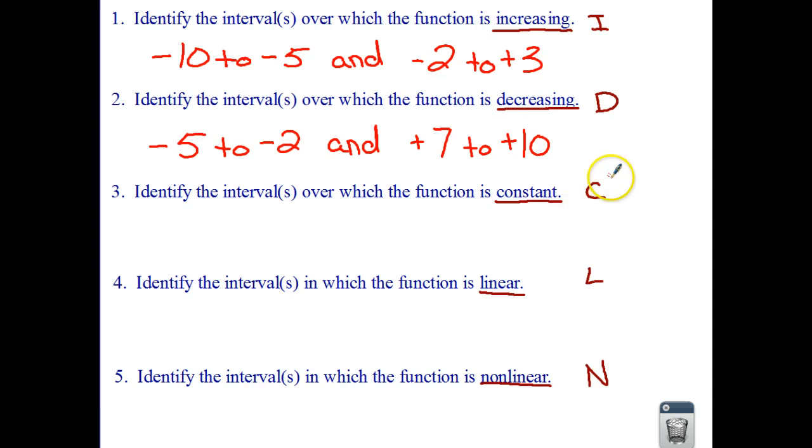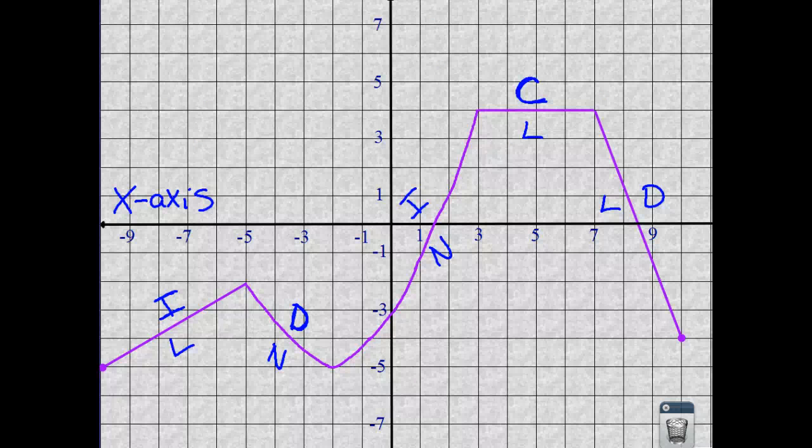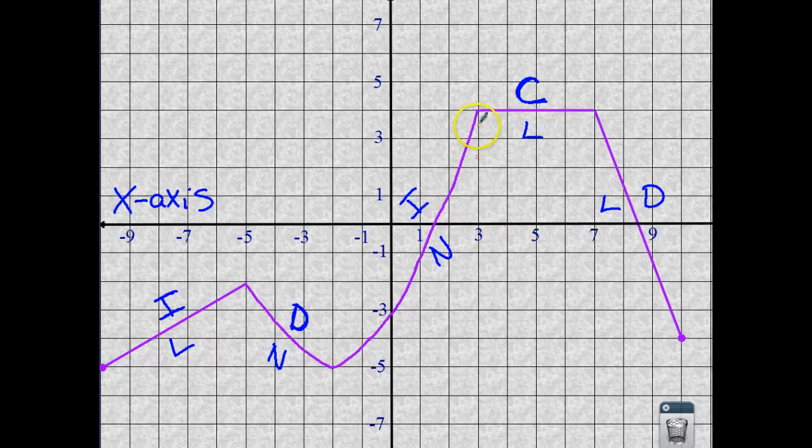Next one we're looking for is the constant change, the constant. And we had one constant, and the constant went from 3 to 7.